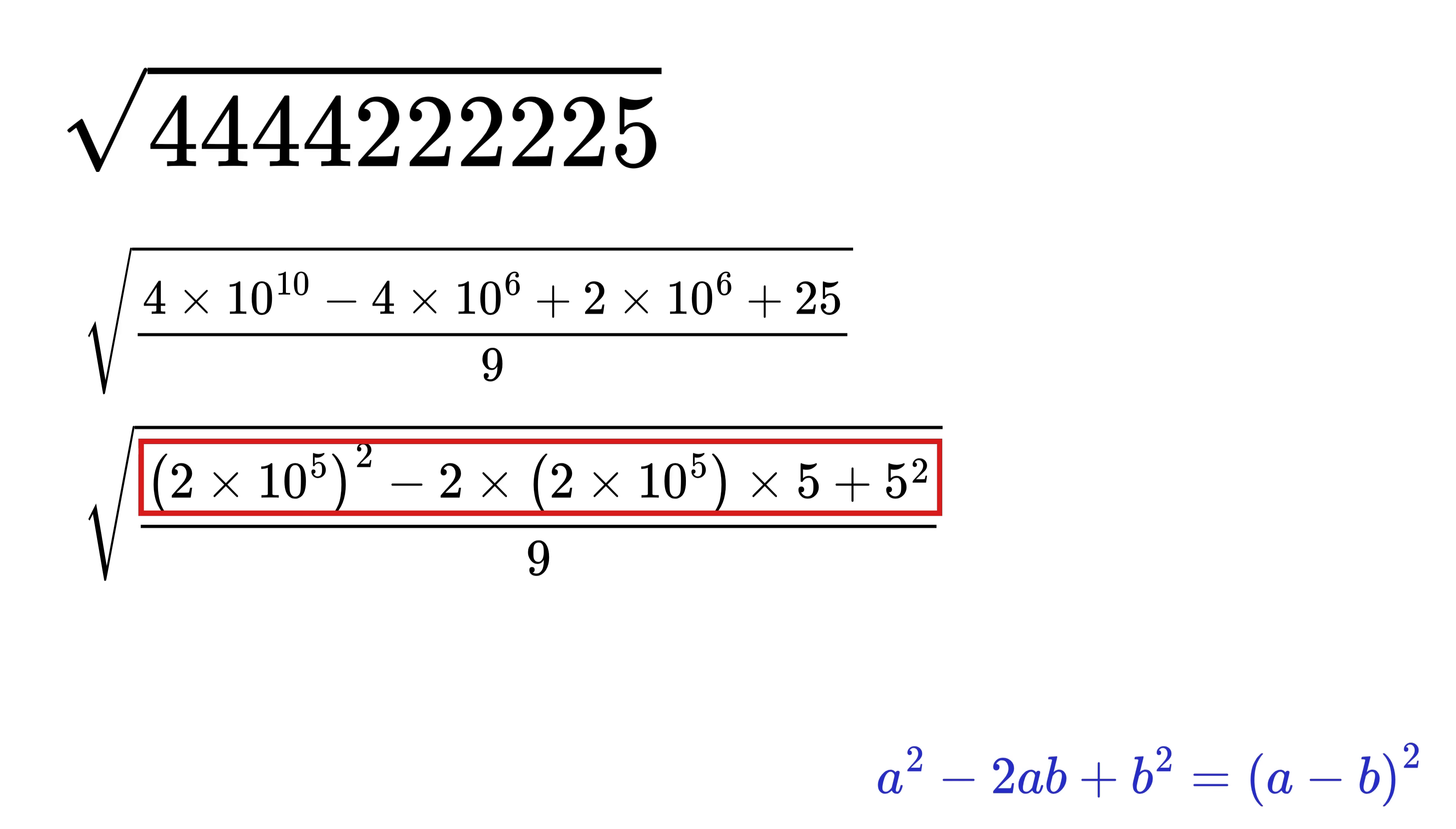Where a is 2 times 10 raised to the fifth power and b is 5. So this will be 2 times 10 raised to 5 minus 5 whole square, and this 9 is nothing but 3 square.